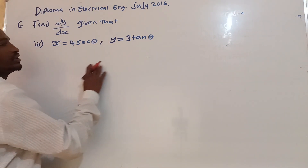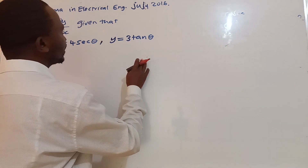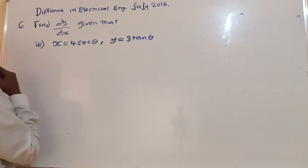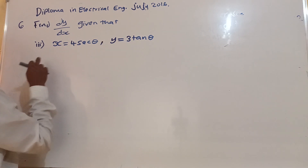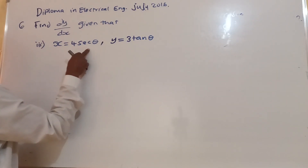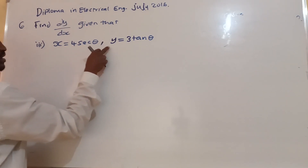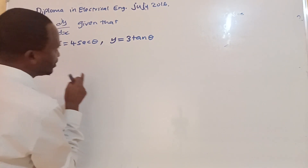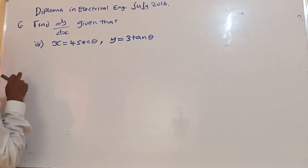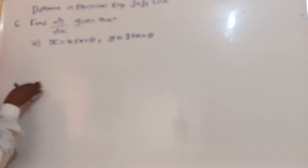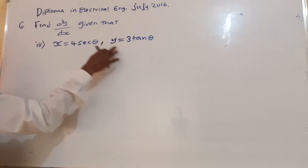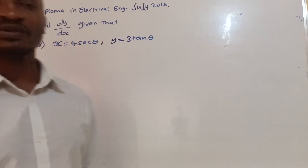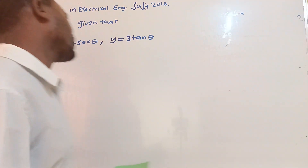Here you should use differentiation by parametric equation, because you have two parametric equations: x is equal to 4 sec theta, and y is equal to 3 tan theta. Both of these are called parametric equations. Theta is a parameter — it's the third variable that we are going to use for the differentiation.